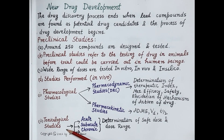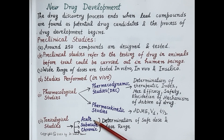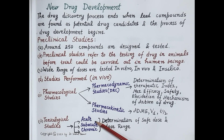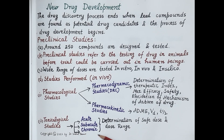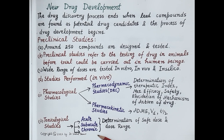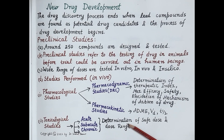The second type of preclinical studies performed in vivo are toxicological studies. Toxicological studies are of three types: acute, sub-acute, and chronic. Acute toxicological studies are short-term animal studies of one to three days — single dose studies — where LD50 and ED50 are determined. Sub-acute studies are of two to twelve weeks with repeated doses. Chronic toxicity studies are long-term studies of six to twelve months with repeated doses. The aim is to determine the safe dose and dose range of potential drug candidates.